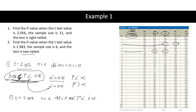This means the p-value is between 0.02 and 0.05. If alpha is 0.05, the null hypothesis can be rejected since the p-value is less than 0.05. If alpha is 0.01, the null hypothesis cannot be rejected because the p-value is greater than 0.01. Note: the actual value using a calculator is 0.02, but when using the table we use the interval.